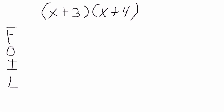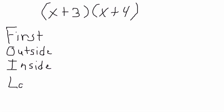FOIL is an acronym that stands for First, Outside, Inside, and Last. Using this acronym, this tells us how we're going to multiply this expression.